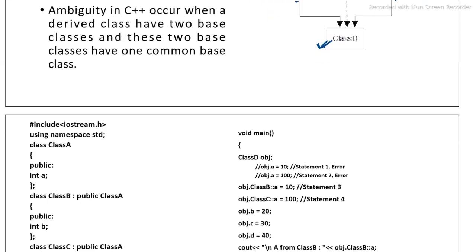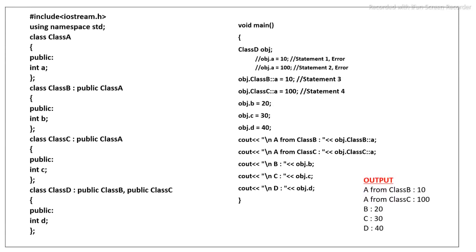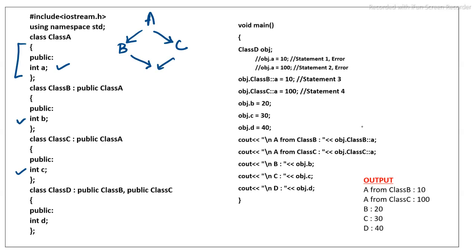Let's discuss an example. Class A is defined with a public integer data member A. Class B is publicly inherited from class A and contains a public data member B. Class C is inherited from class A and contains a public data member int C. From class B and class C, class D is derived, containing a public data member integer D.